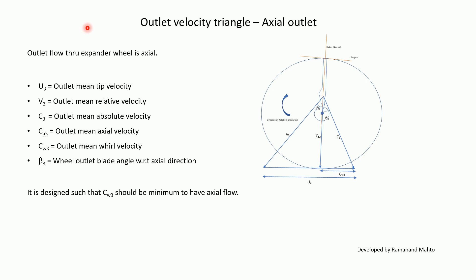At the outlet of the Expander Wheel, flow is axial. U3 is the outlet mean tip velocity — note that all outlet velocity triangle quantities are evaluated at the mean or average blade height at the outlet. V3 is outlet mean relative velocity, C3 is outlet mean absolute velocity, Ca3 is outlet mean axial velocity, and Cw3 is outlet mean whirl velocity. β3 is the outlet blade angle with respect to axial. The wheel is designed such that Cw3 is minimum to achieve axial flow.